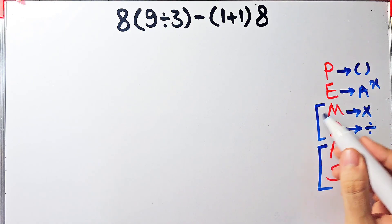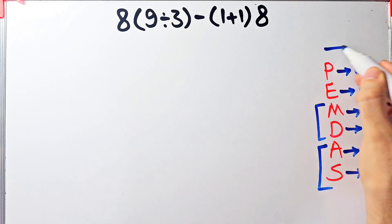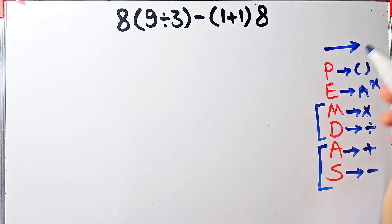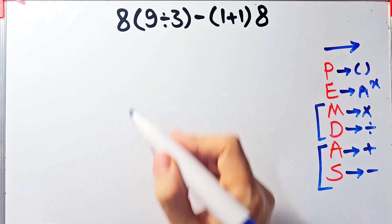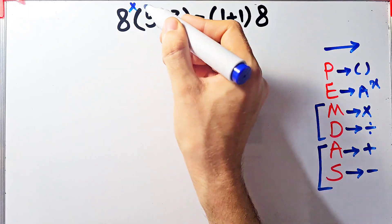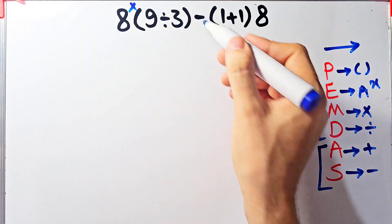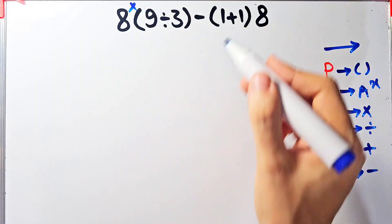When we have both in an expression, we start from the left and simplify. In this question we have multiplication, parentheses, division, subtraction, and addition.